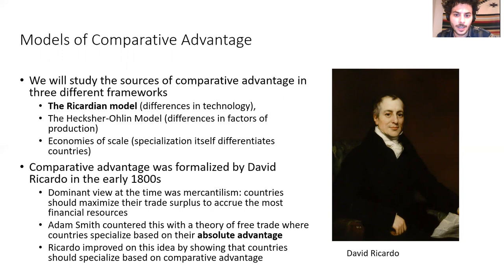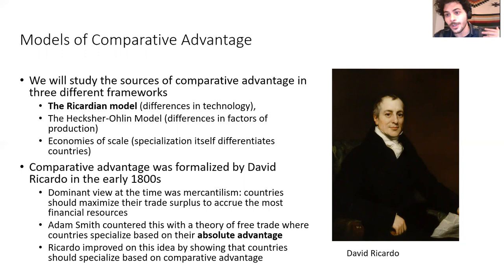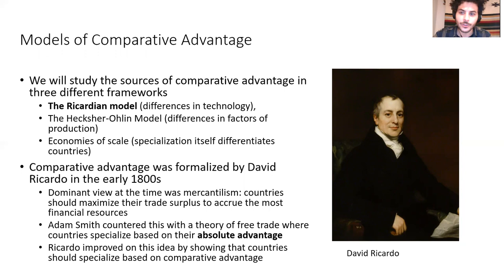A bit of intellectual history: the model we're studying was written down by David Ricardo in the early 1800s. A dominant view at the time was mercantilism—the idea that what makes countries rich is how much gold they have. The implication for trade was that countries should maximize their trade surplus, exporting more than importing to accumulate more gold. Adam Smith, in Wealth of Nations, spent a lot of time refuting this, developing a theory of free trade where countries specialize based on absolute advantage. His idea was that countries are wealthy not because of gold, but because of how much they can consume—and trade lets you consume more.